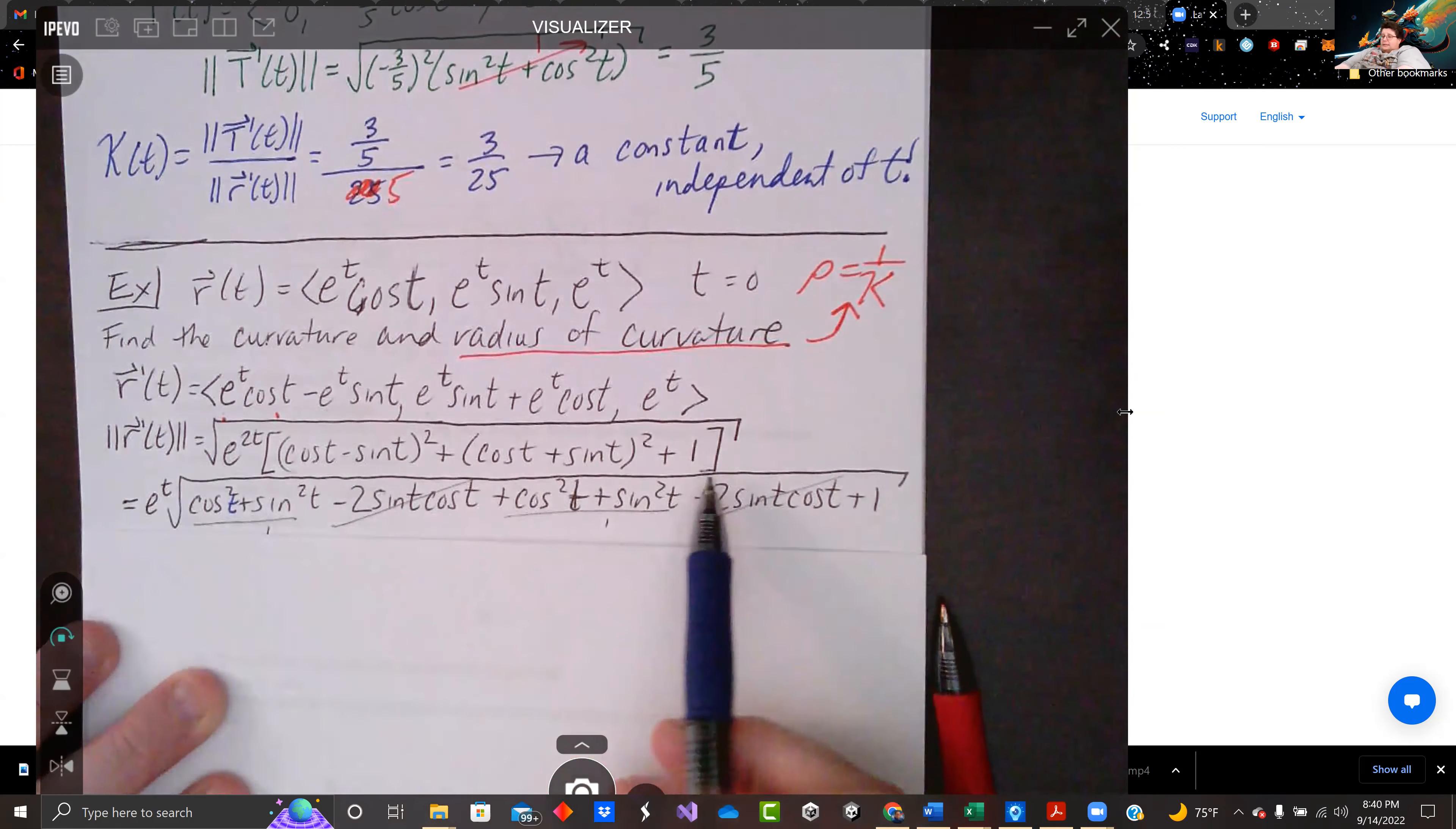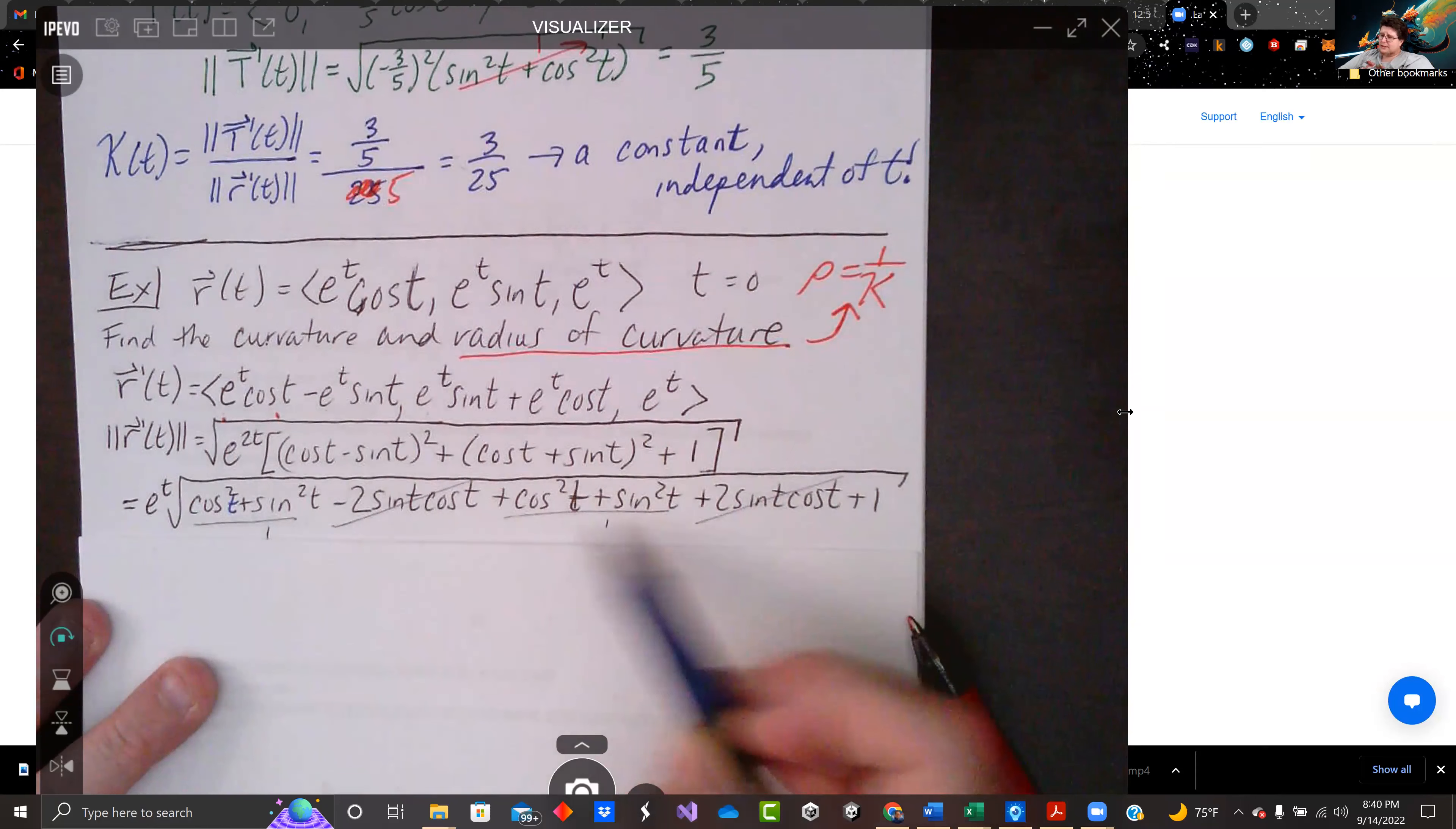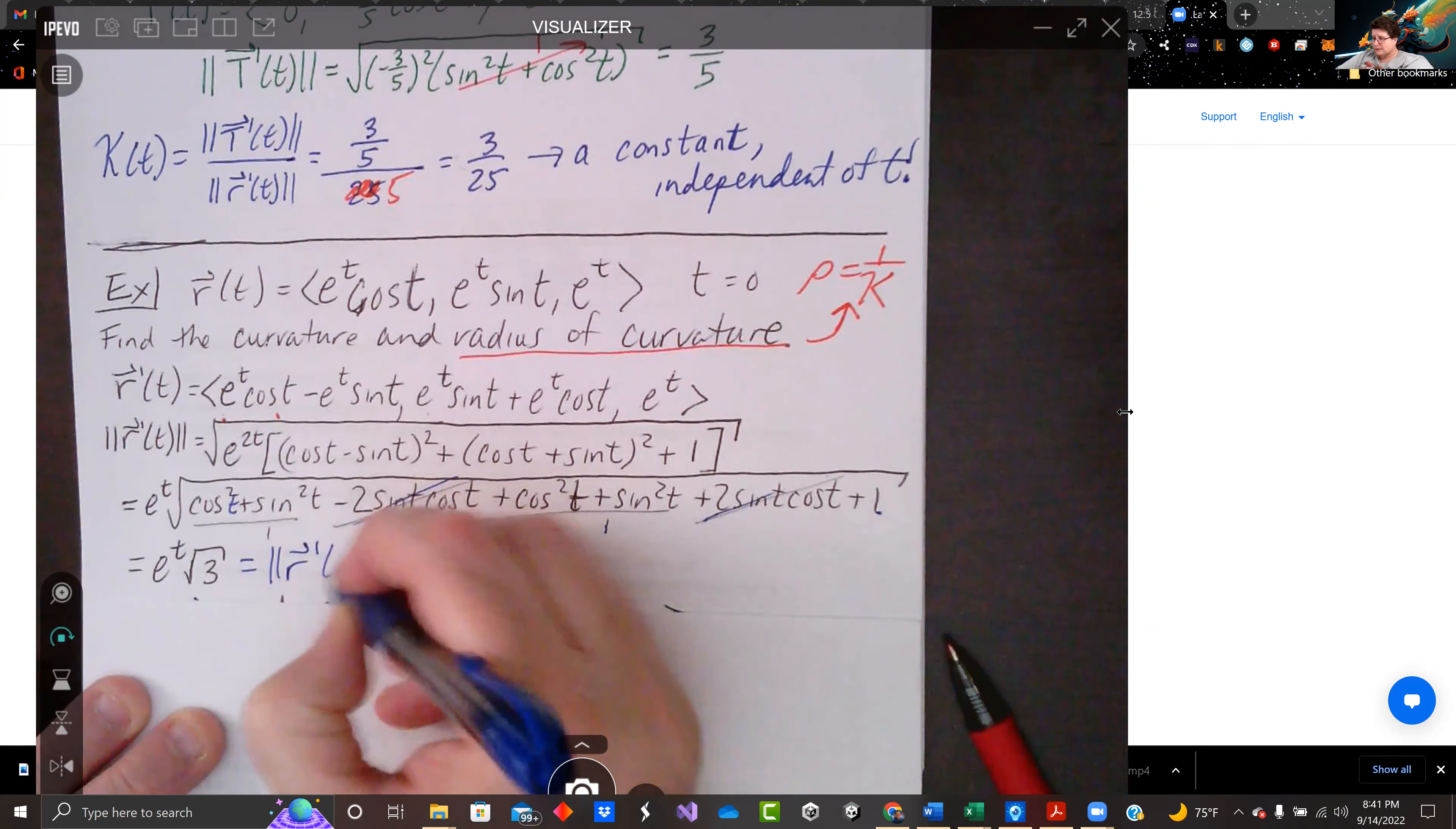So I just factored that out and then took the squares. Or you could have taken the squares first, then factored it out. But you're going to get that step. We do all this stuff. We get cosine squared and sine squared from this. We also get a negative two sine t cosine t. When we do the second parentheses, we get the cosine squared and sine squared again. And now we get a positive two sine t cosine t. Again, those cancel. We're left with one and one and one. So I've got e to the t root three. And that is my magnitude of r prime.